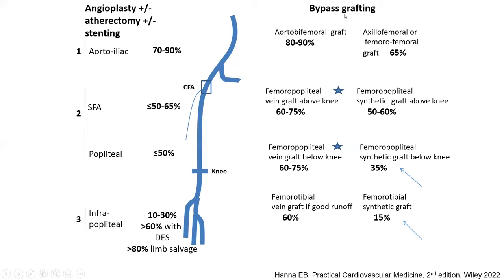Bypass grafting has better patency than endovascular treatment in terms of patency at all levels, with some exceptions, though it has superior patency overall. At the aortoiliac level, the difference between stenting and aortobifemoral grafting is not much different — we get excellent patency with stenting at the aortoiliac level.